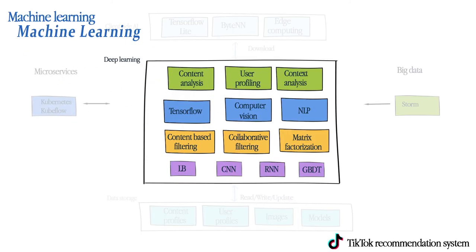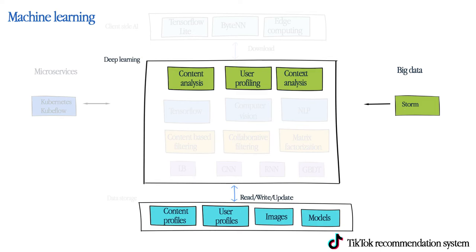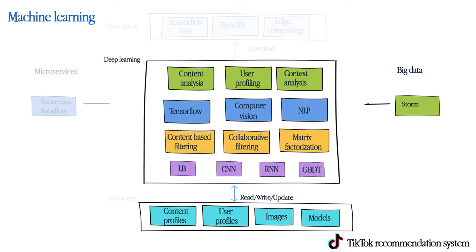Machine learning is the brain of the recommendation system — this is where the magic happens as the datasets pour in. Next is content analysis and user profiling. The neural network deep learning framework TensorFlow is used to perform computer vision and natural language processing. Classic machine learning algorithms and common recommendation techniques are also applied.